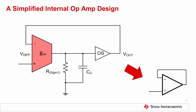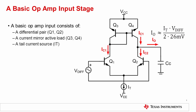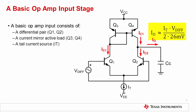Let's take a closer look at the input stage. The classic input stage features a differential pair of transistors, shown here as Q1 and Q2. This differential pair has a current mirror in the collector leg, shown here as Q3 and Q4, and a tail current source, shown here as IT. The current that the input stage sources or sinks into the Miller compensation capacitor is roughly the tail current multiplied by the differential input voltage divided by 2 times the thermal voltage, which is approximately 26 millivolts.